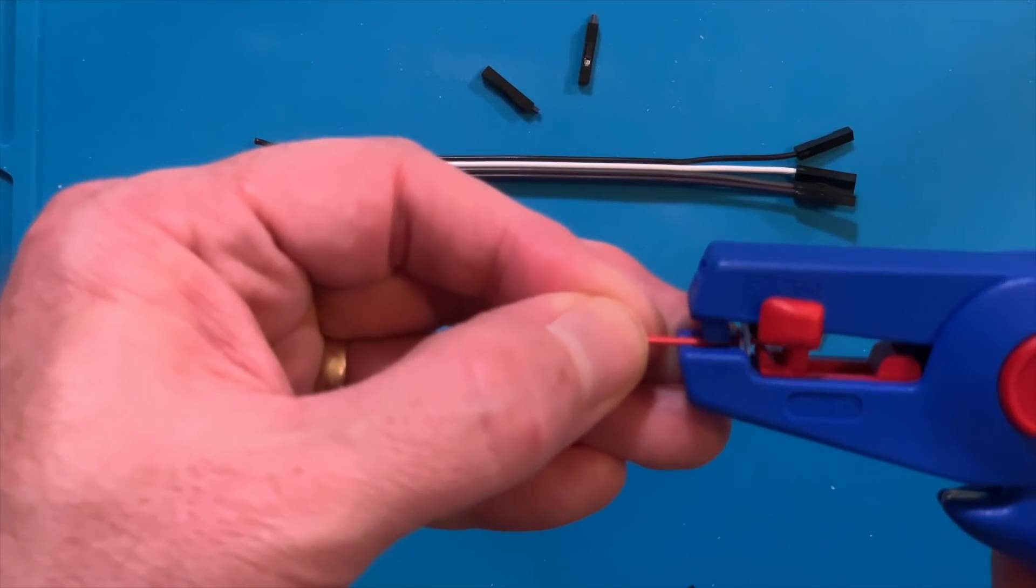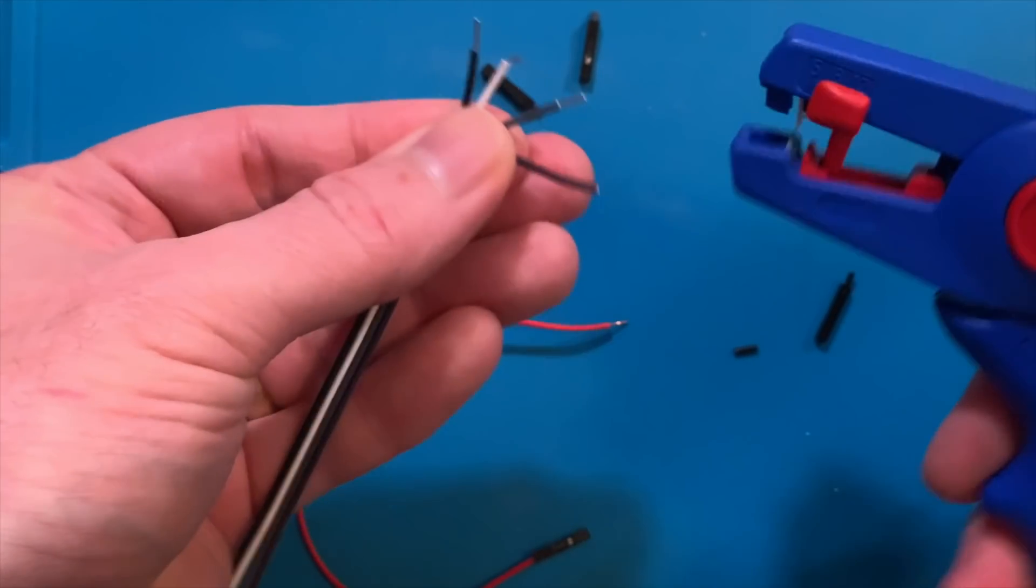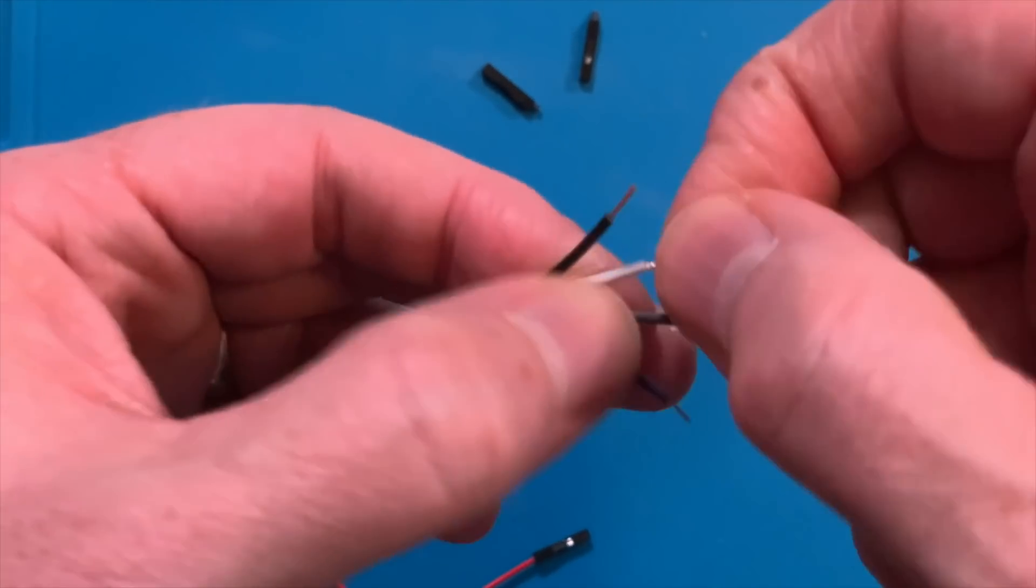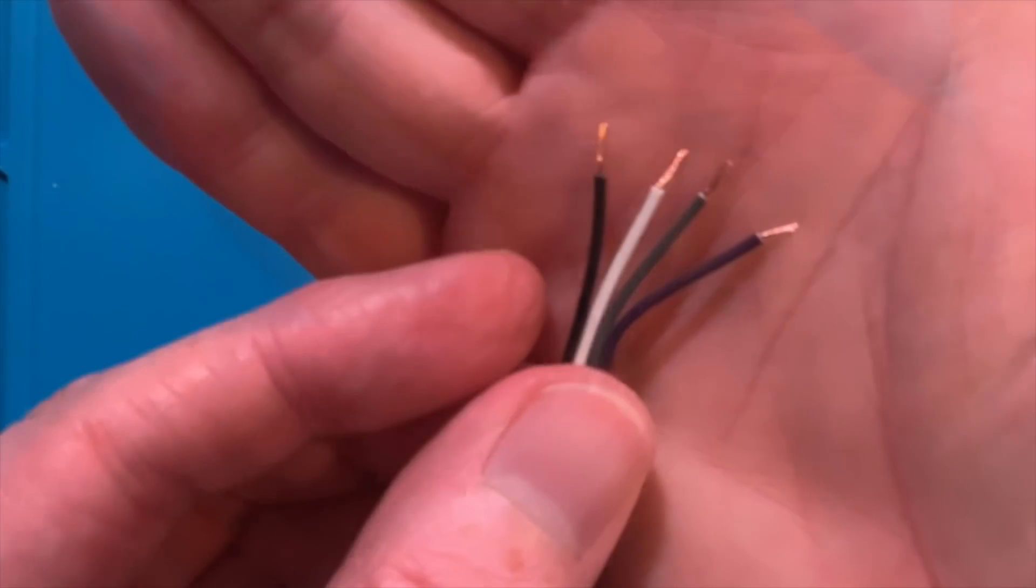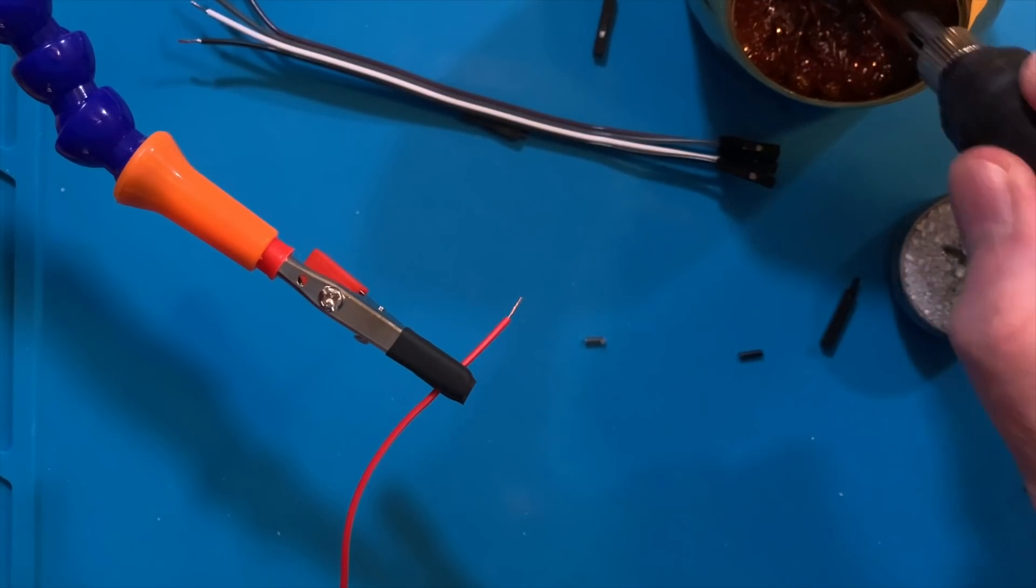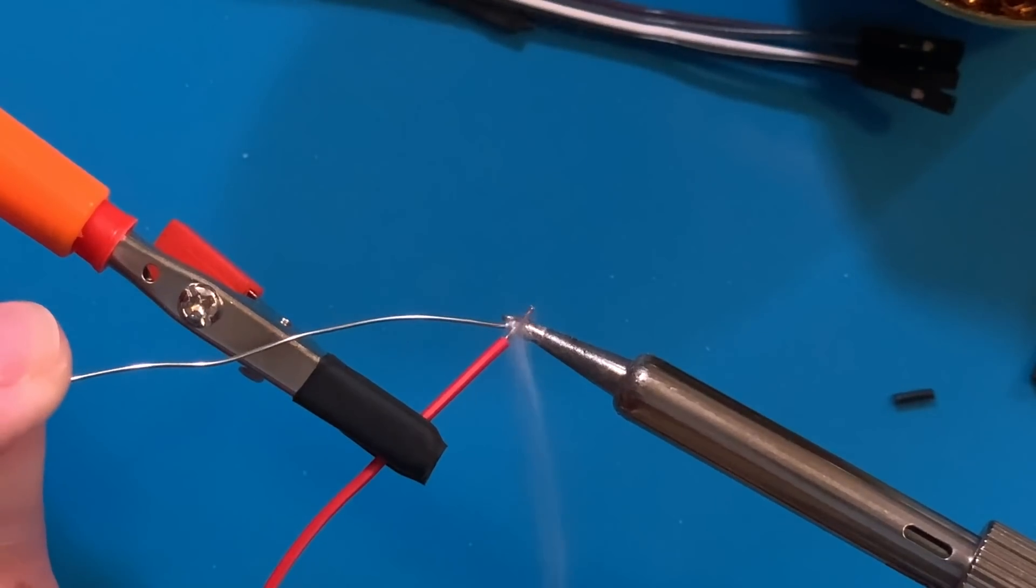On the red wire, cut the socket off one end of it. And on that ribbon cable with only four wires, do the same. Cut the sockets off only one end of the wires on the ribbon cable. Next, strip a little bit of insulation from the ends of those wires. Five millimeters is just about the right amount.